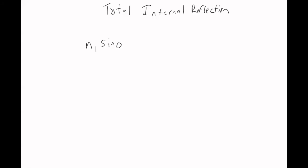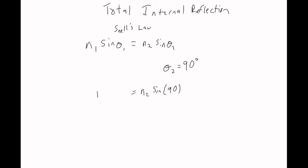Total internal reflection was the case where if we start with Snell's Law and then we set theta two equal to 90 degrees, then we get n2 sine of 90 equals n1 sine theta one. Sine of 90 degrees is one, so you just get this equation.